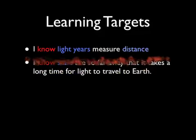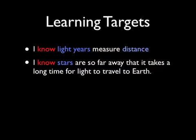The second learning target is that you know stars are so far away that it takes a long time for light to travel to the Earth. We're talking about our sun, but we're also talking about stars that are outside of our solar system. Stars are just balls of gas made of hydrogen and helium, and they're burning and emitting, or giving off, light and heat energy.